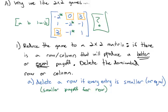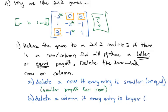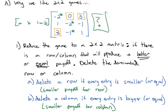We delete the dominated row because regardless of what the column player does, this row is always worse for the row player — you would never go there. Similarly, we delete a column if every entry is bigger or equal to another column. Remember, column players like small negative numbers — they don't like big numbers. So if every entry is bigger than another column, regardless of what the row does, this is a worse payoff for the column player, and we get rid of that always-larger option.